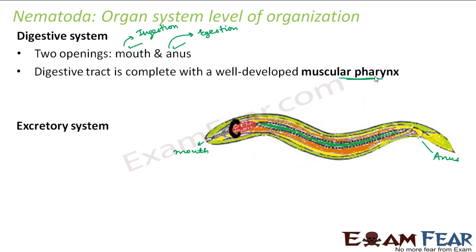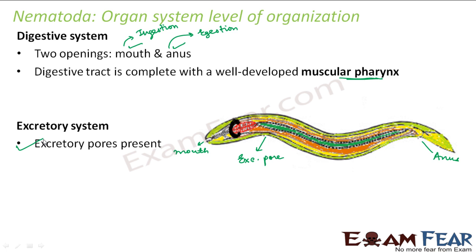Talking about the excretory system — nematodes have specialized excretory pores present on their body. Through these excretory pores, all the waste materials of the body are expelled. Cilia or flagella also help in this process by aiding the movement of waste products outside.